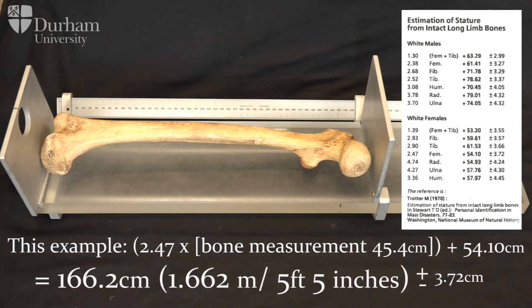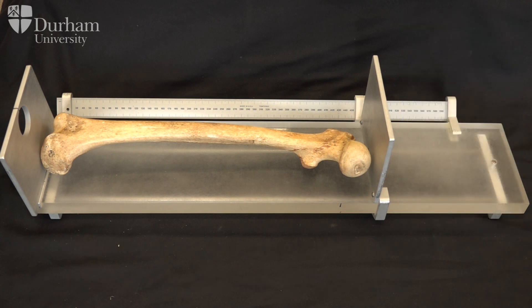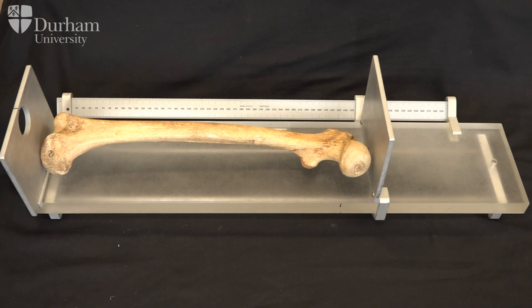The mathematical methods are significantly quicker to use and allow for stature to be calculated even from quite incomplete skeletons. However, these methods are based on population averages and therefore don't take into account individual differences in body proportions — for example, if a person has shorter legs and a longer trunk. Body proportions do vary between populations, and this is an important consideration when using mathematical methods.